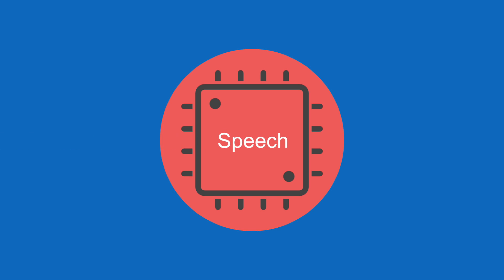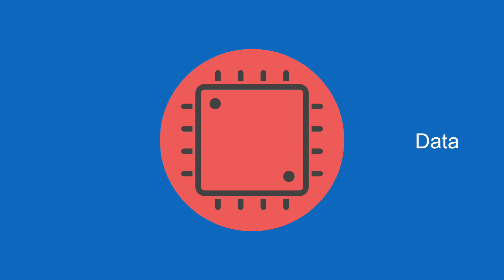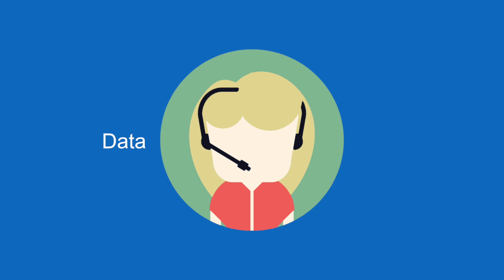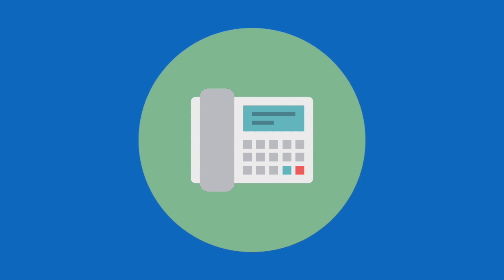An Analog Telephone Adapter allows you to plug your traditional non-VoIP telephone into your internet router, effectively turning it into a VoIP phone. The ATA's built-in processor digitally encodes your voice as you speak and then sends that data to your VoIP provider, who then connects you to the PSTN to transmit your call.